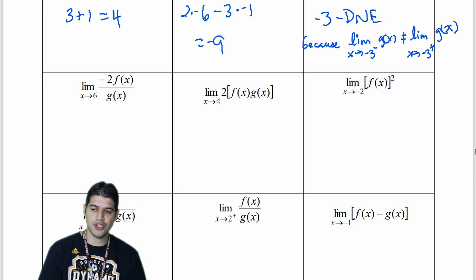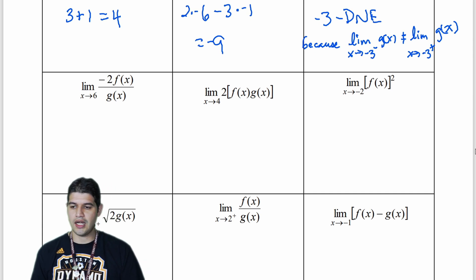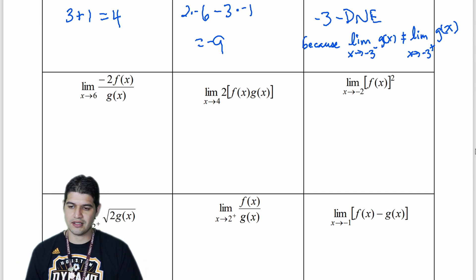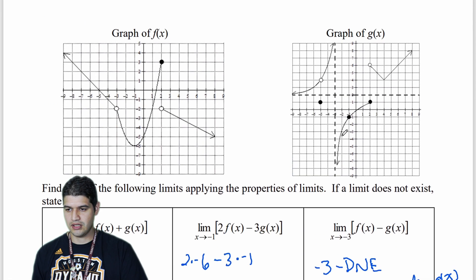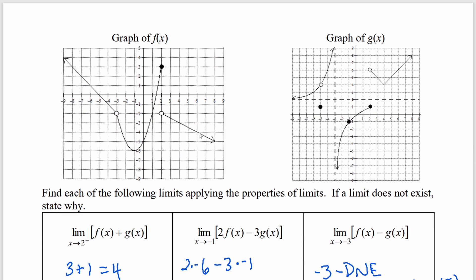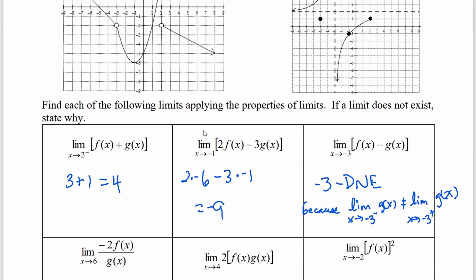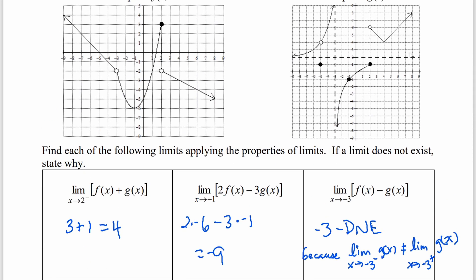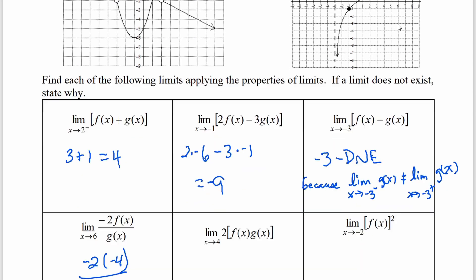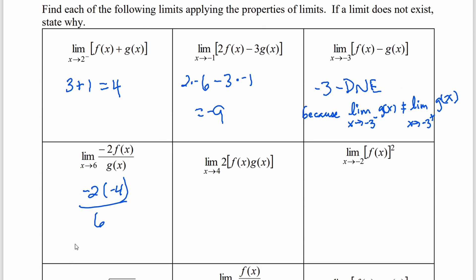For negative 2 times f of x over g of x, looking at the limit as x approaches 6: f of x at 6 has a y-value of negative 4, so the numerator is negative 2 times negative 4, which is 8. For g of x at 6, the y-value is positive 6. So we have 8 over 6, which simplifies to 4 thirds.